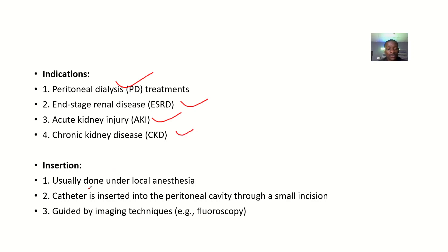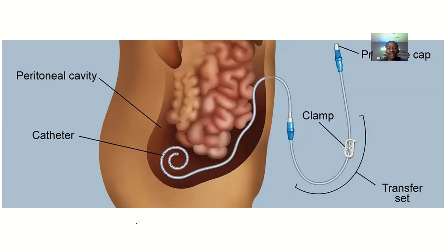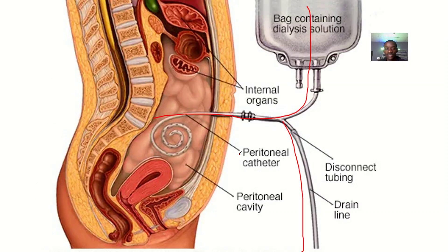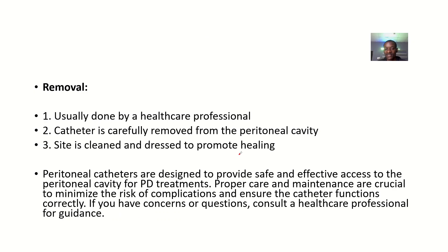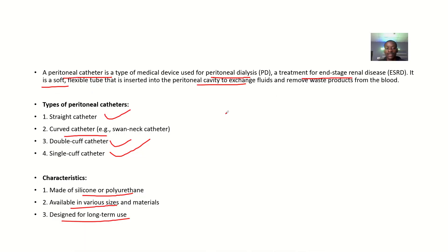For insertion, this is usually done under local anesthesia. The catheter is inserted into the peritoneal cavity through a small incision. It is guided by an imaging technique — you could use things like fluoroscopy. You can see the peritoneal cavity with the catheter going in there. This appears to be the single cuff type, as it has just one part.